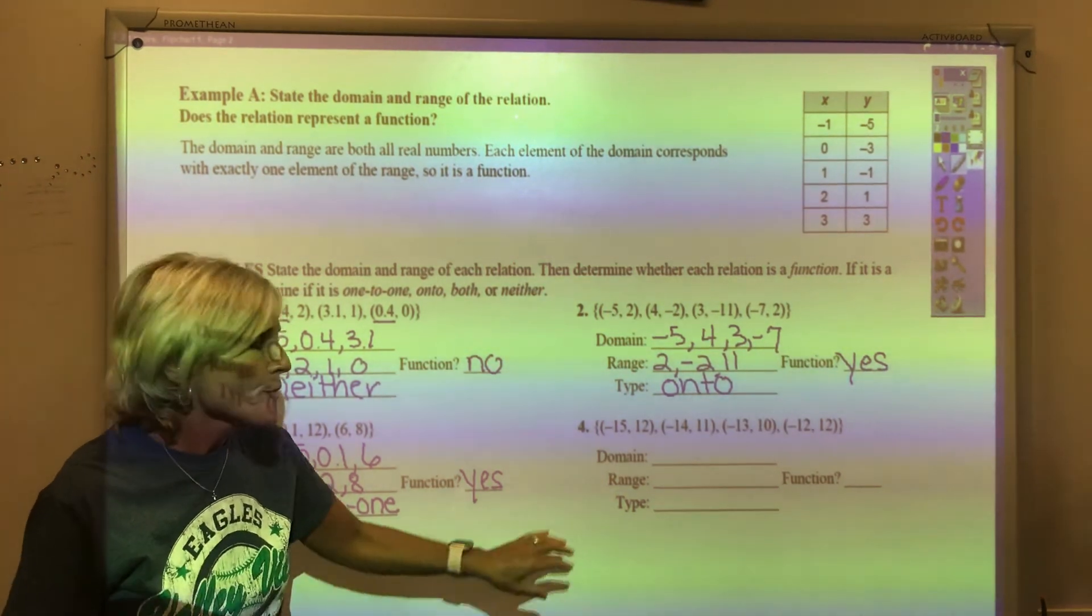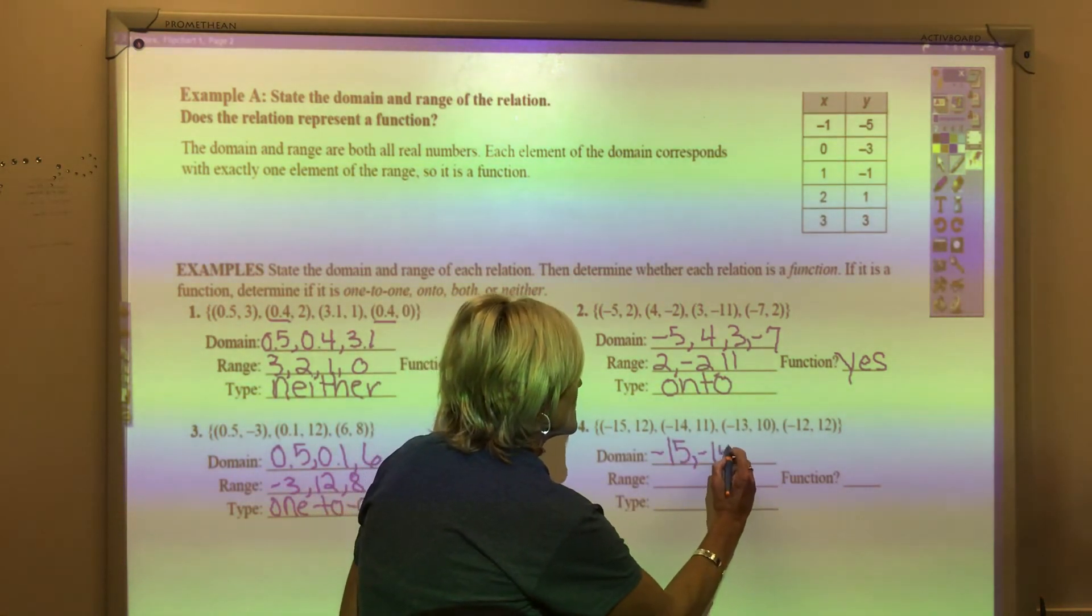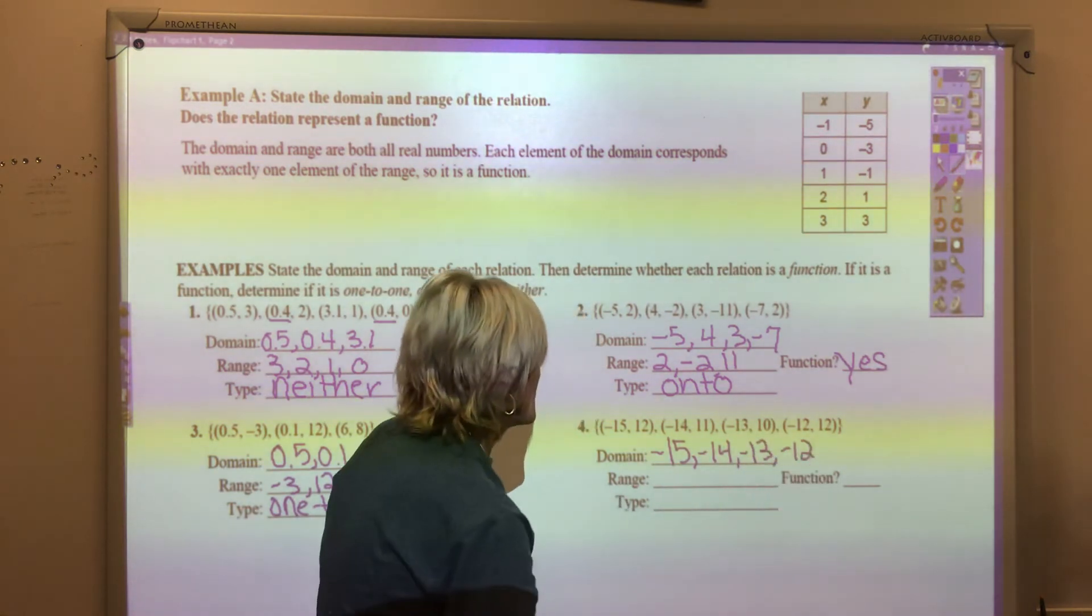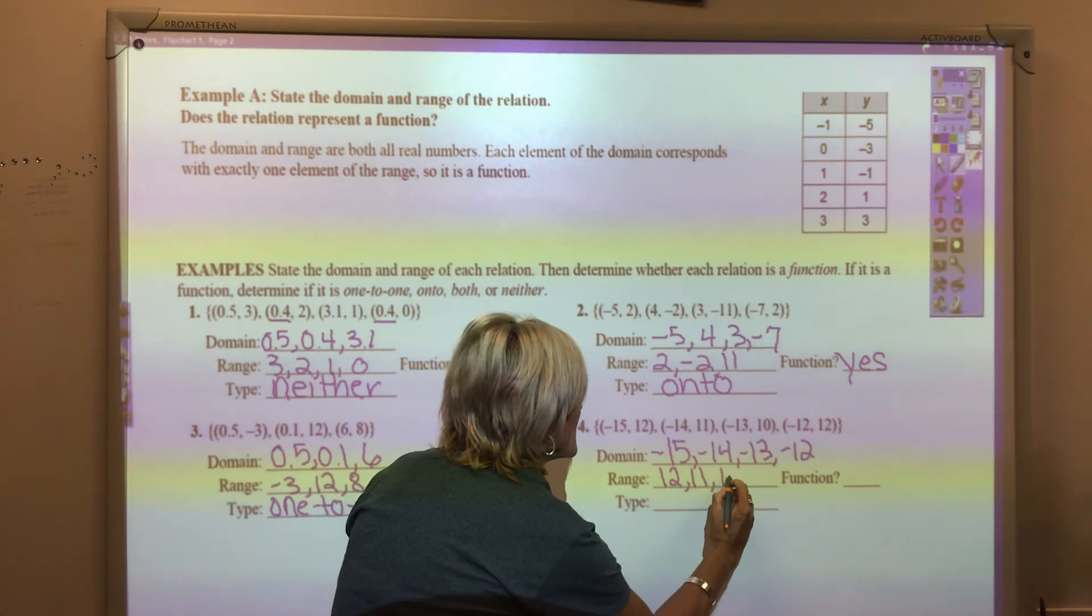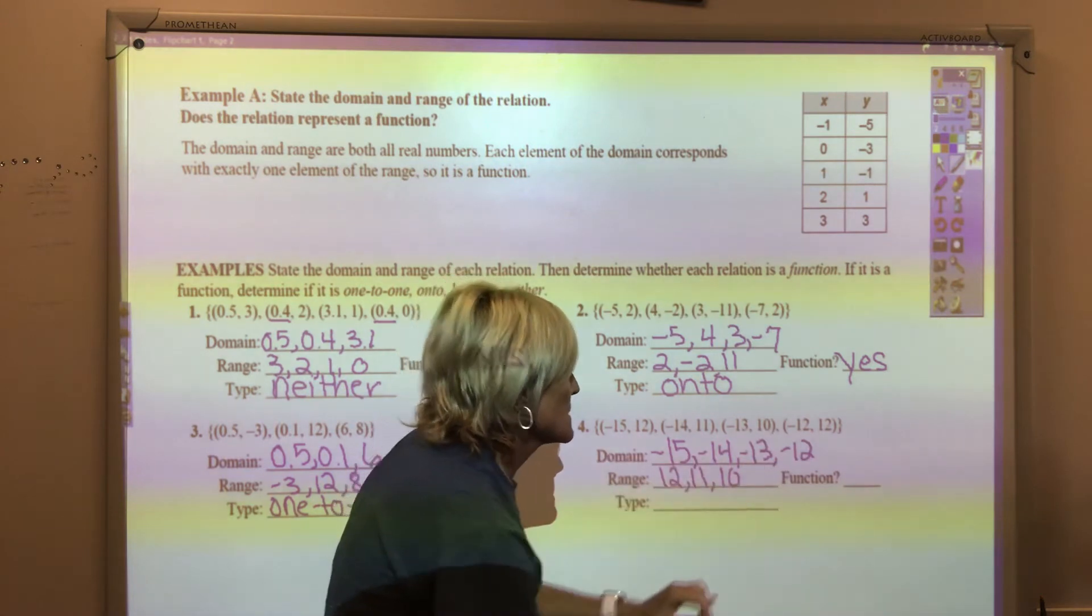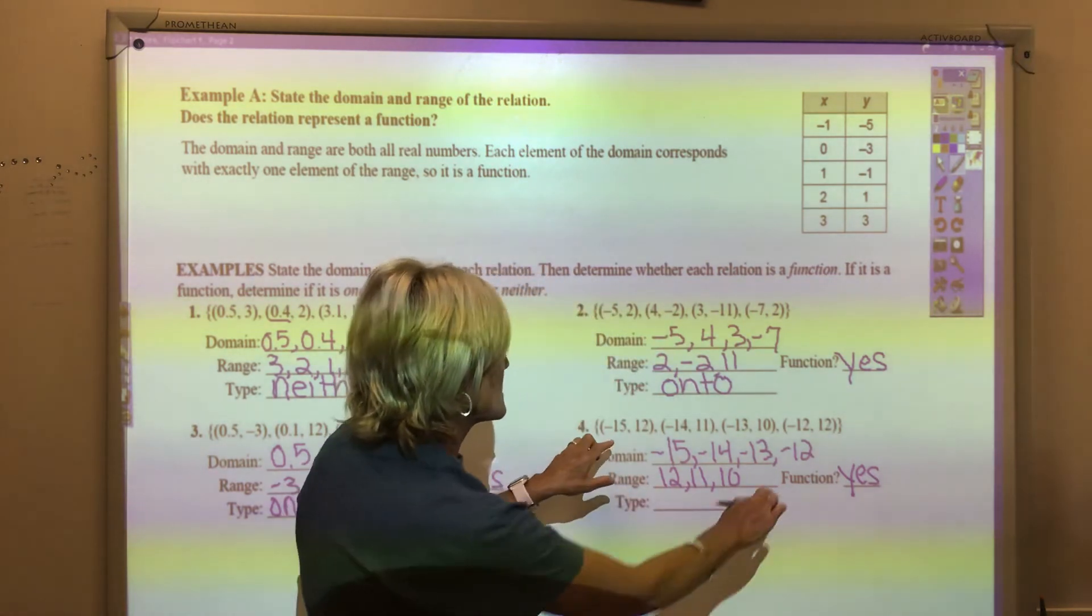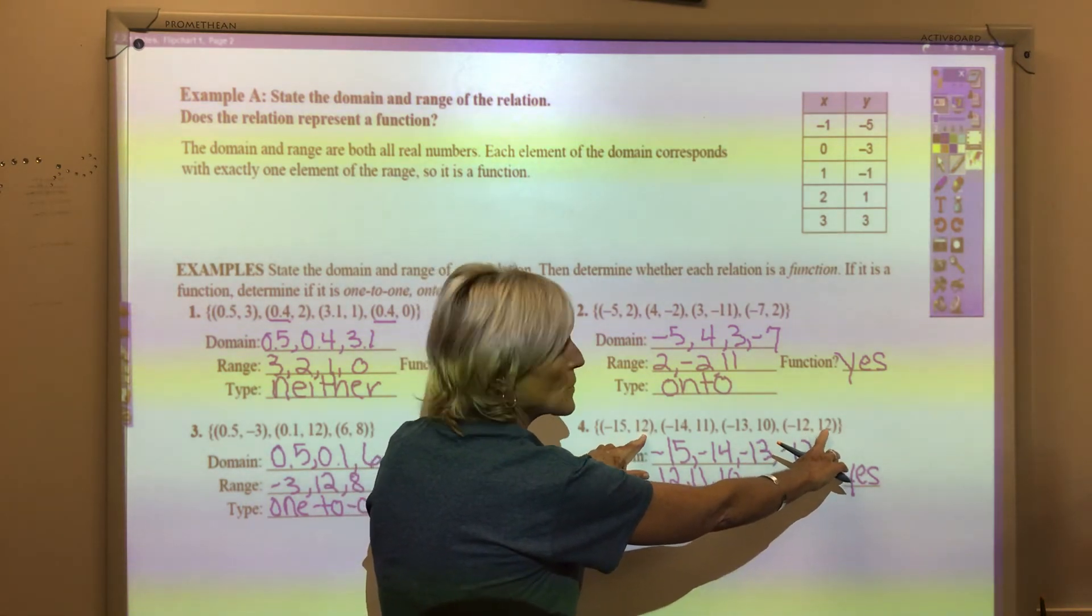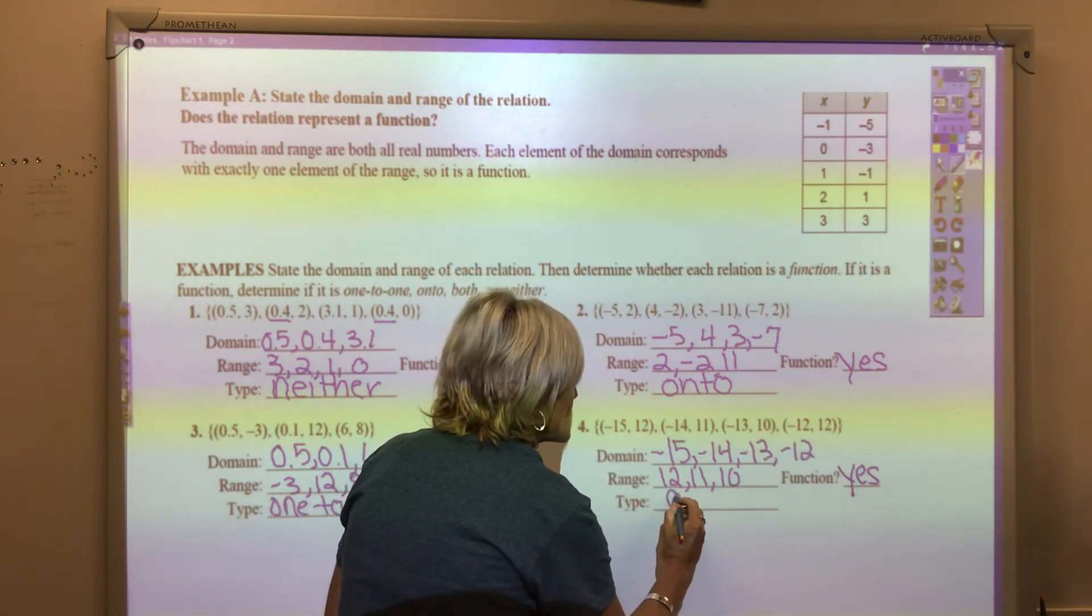For number 4, the domain is negative 15, negative 14, negative 13, and negative 12. The range is 12, 11, 10, and notice the 12 repeated itself. x did not, so yes, this is a function, but two x's, both negative 15 and negative 12, are both paired with 12, so two x's are going onto one y. This is an onto function.